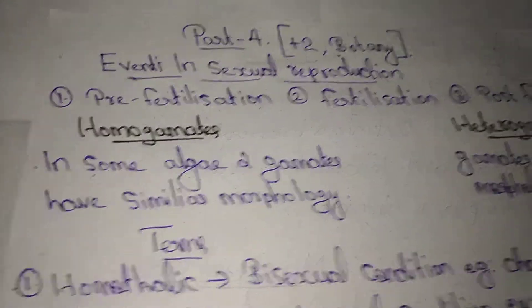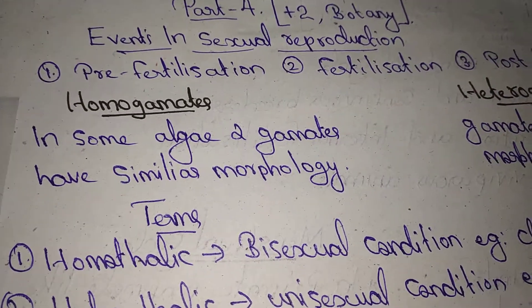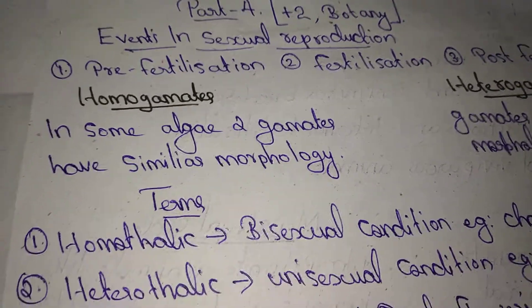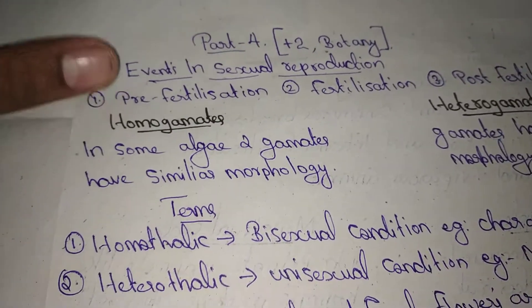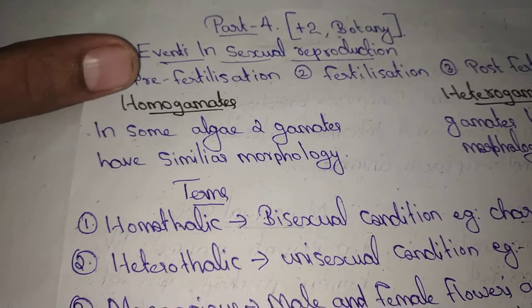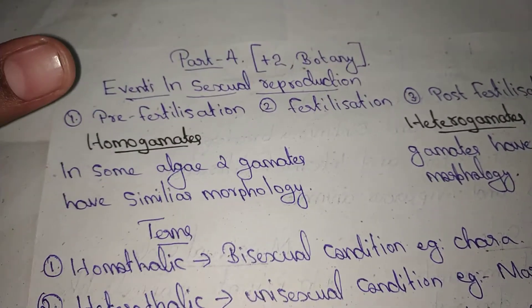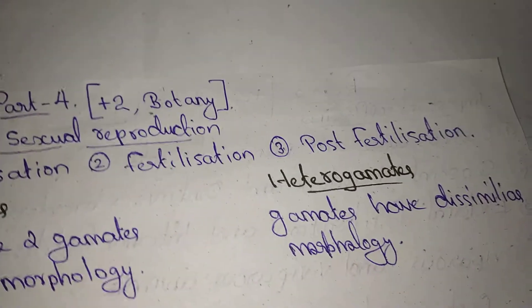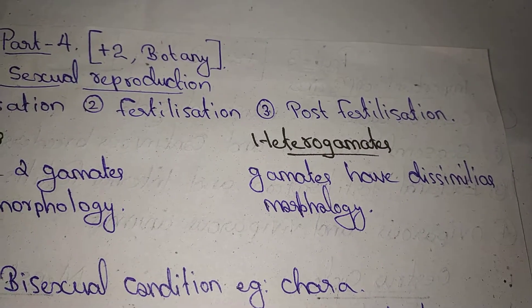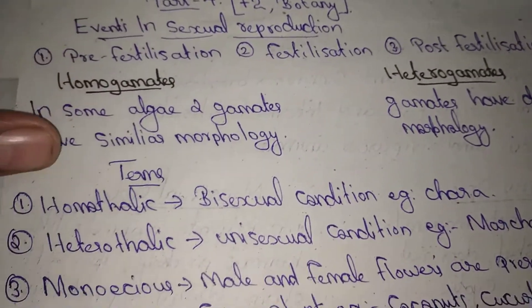Homogamete and heterogamete. Homogamete is the term — in some algae, two gametes have similar morphology. Heterogamete is the term for dissimilar morphology.